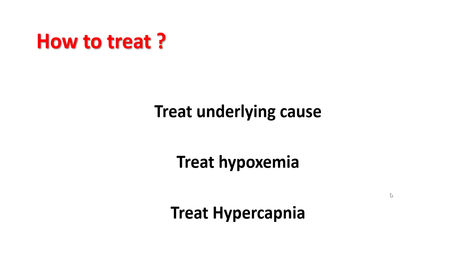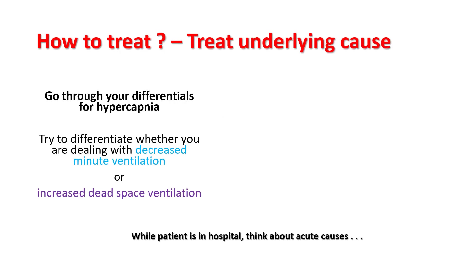Treatment is based on three principles: treat the underlying cause, treat hypoxemia, and treat hypercapnia. To treat the underlying cause, go through your differentials for hypercapnia as described previously. Try to figure out whether you are dealing with decreased minute ventilation or increased dead space ventilation. The easiest way is to look at the respiratory rate of the patient, which gives you some idea about what you are dealing with.